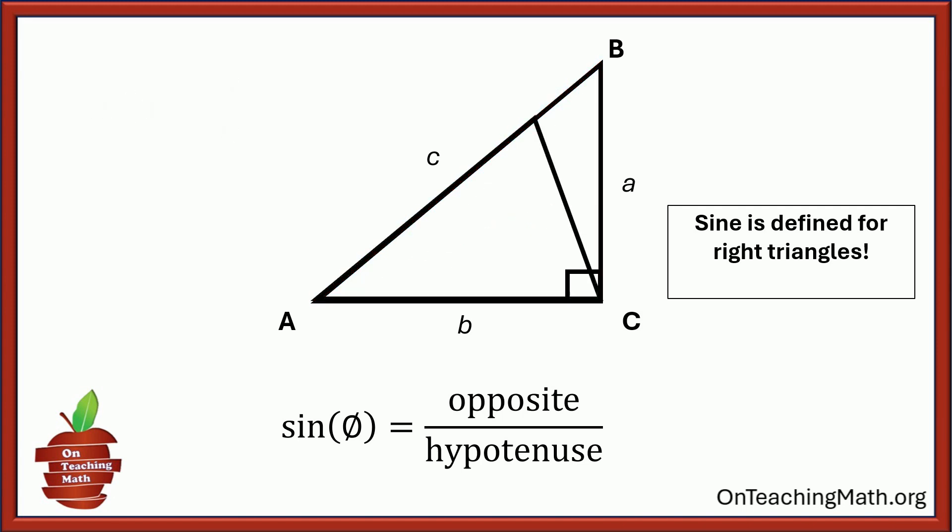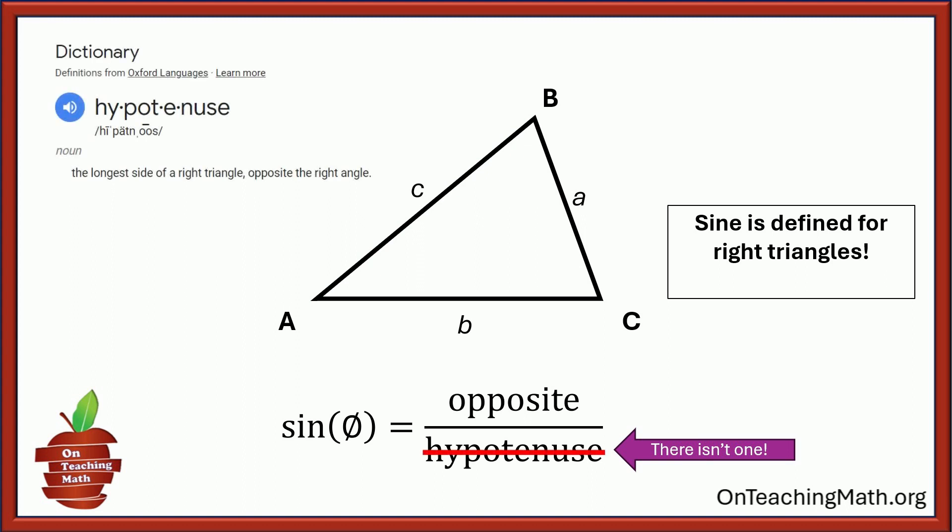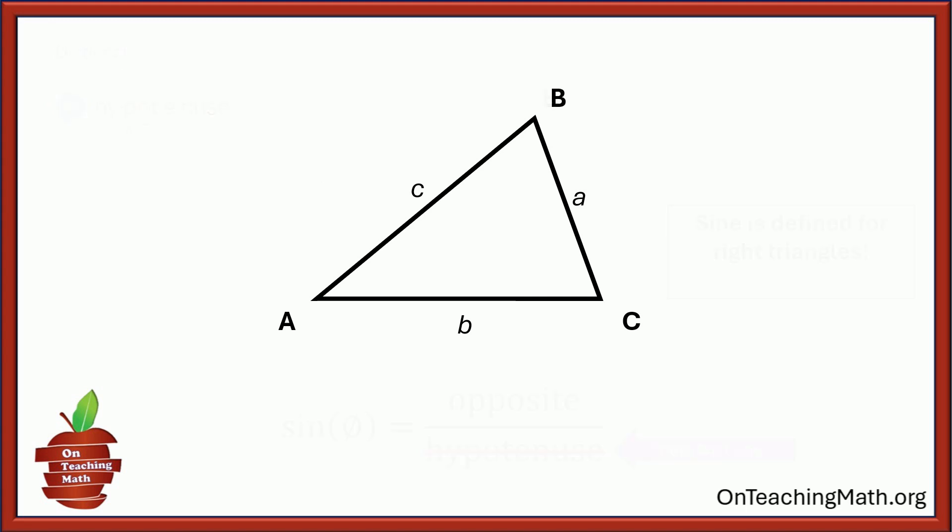But what if we have a triangle that's not a right triangle? Well, no longer do we have a hypotenuse. And the hypotenuse is not just the longest side, it's the longest side of a right triangle opposite the right angle. We no longer have a right angle, no hypotenuse. So how can we use sine for something like this? Where does that sine rule come from?